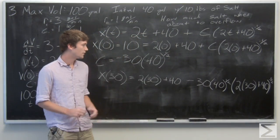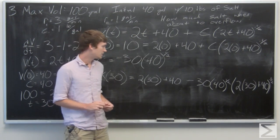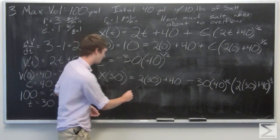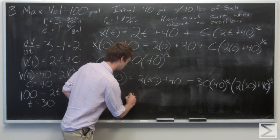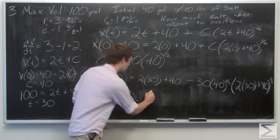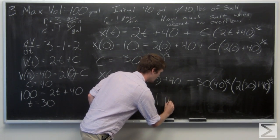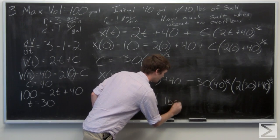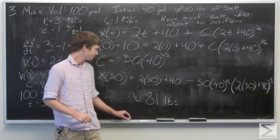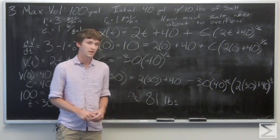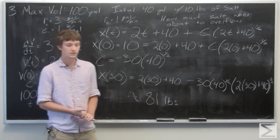We get the resulting equation, which looks messy but simplifies nicely. We find that the amount of salt is about 81 pounds. So there will be 81 pounds of salt in the tank when it is about to overflow.